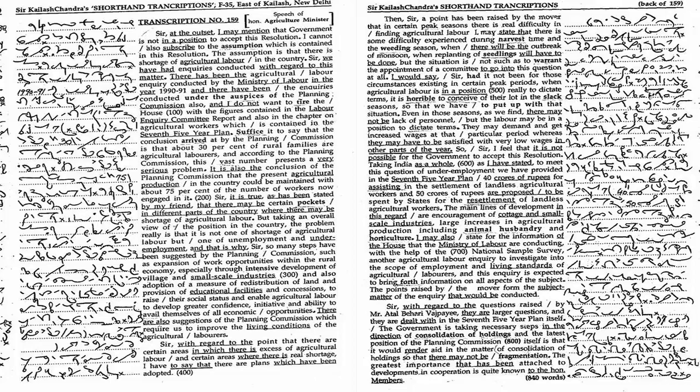It is also the conclusion of the Planning Commission that the present agricultural production in the country could be maintained with about 75% of the number of workers now engaged in it. Sir, it is true, as has been stated by my friend, that there may be certain pockets in different parts of the country where there may be shortage of agricultural labor.